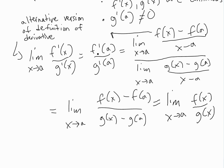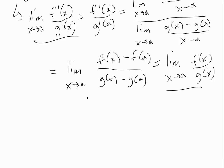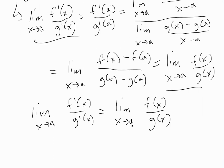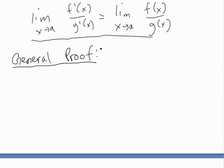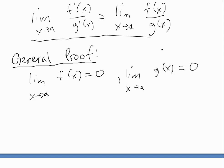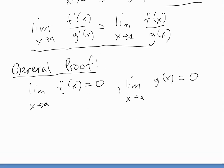And there you go — that gives us the proof of L'Hôpital's Rule for the special case. Now let's look at a general proof. The general proof is for when you have the limit as x approaches a of f(x) equals 0 and the limit of g(x) equals 0 as x approaches a. Here we're not assuming that f(a) or g(a) actually equal 0, or even that f(a) exists.